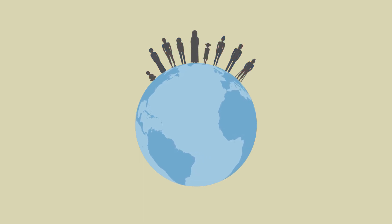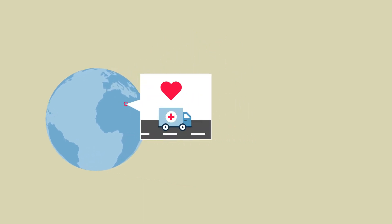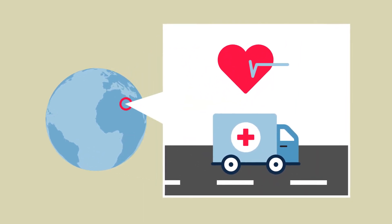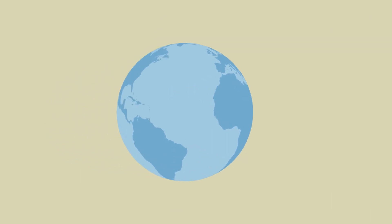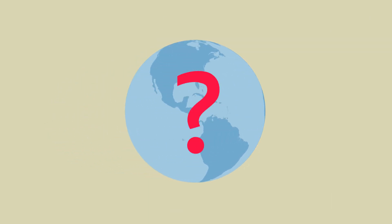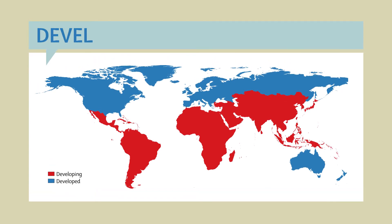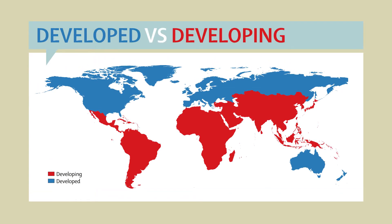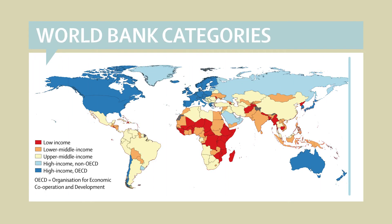Understanding causes of death worldwide illustrates the health challenges facing specific regions. But how can we place a country's results in the context of its level of development? Scientists have been trying to move away from labelling countries as developed or developing, and World Bank categories give a picture of development limited to income.